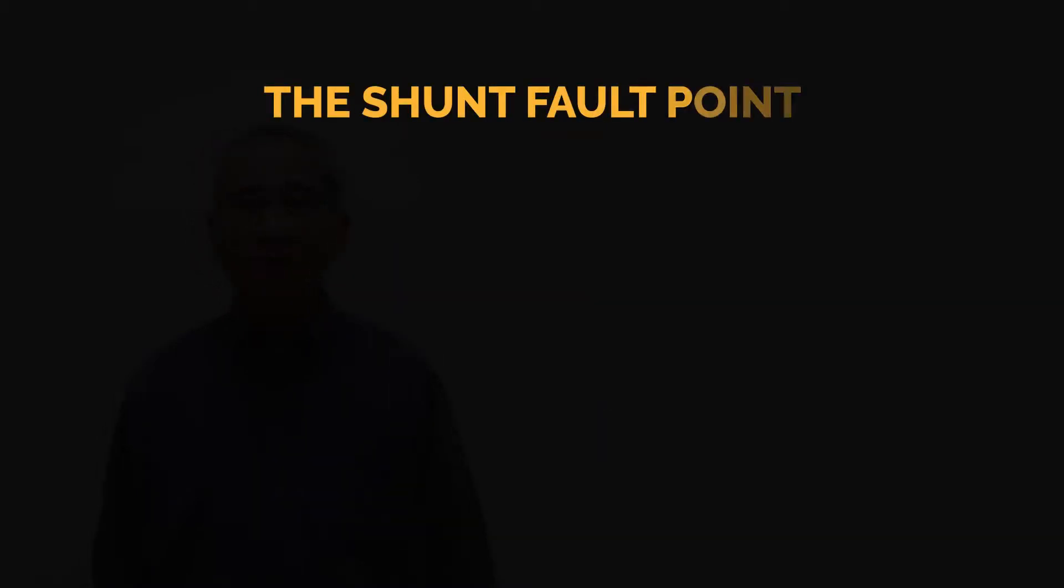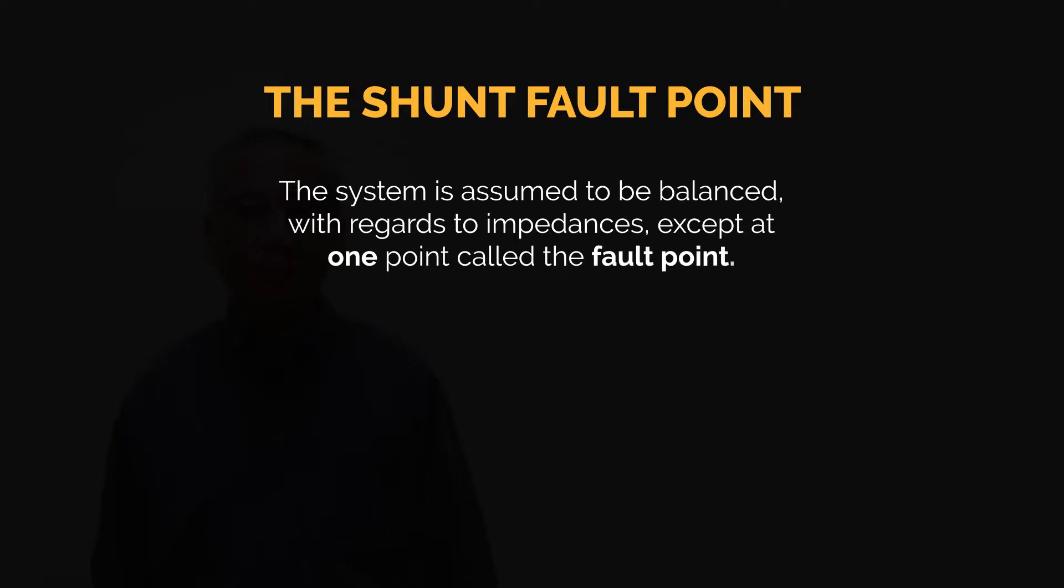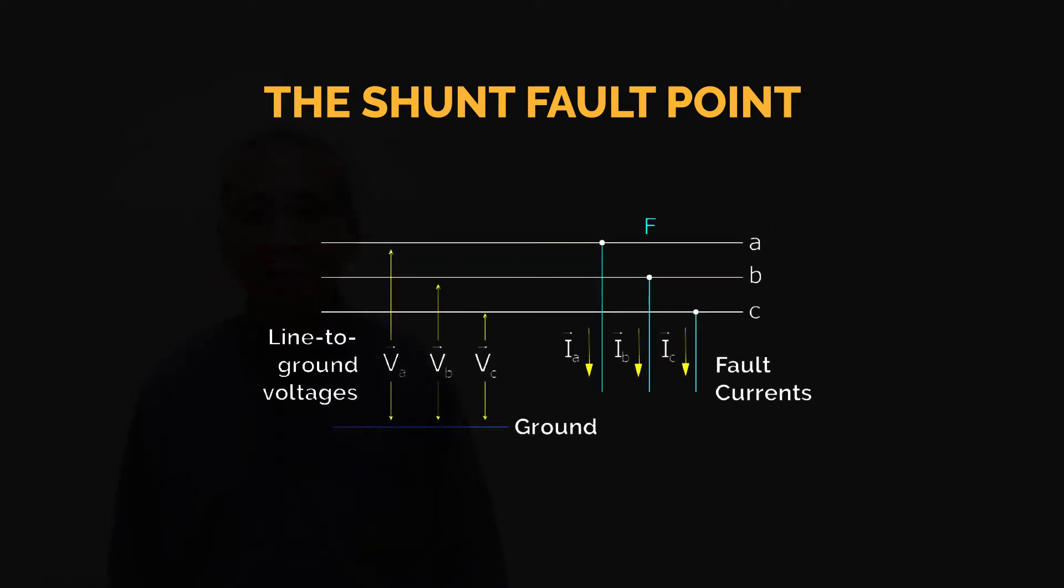Now, the shunt fault point. As mentioned in our previous module, the system is assumed to be balanced with regards to the impedances, except at one point called the fault point, as shown in the diagram.